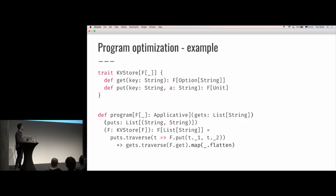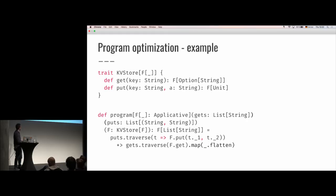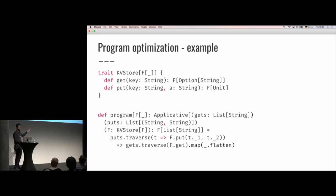Let's look at this fairly simple program. We have a program that is bounded by applicative, and we have a list of get requests. We have a list of keys we want to get, signified by this 'gets' parameter, and we have a list of things we want to put into this KV store — a list of string-string tuples representing key-value pairs. We also need our KV store interpreter right here. And at the end we want to return a list of all the values we got out of this KV store.